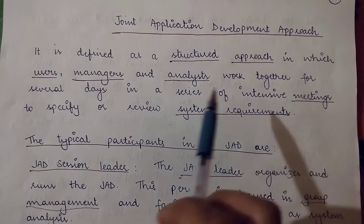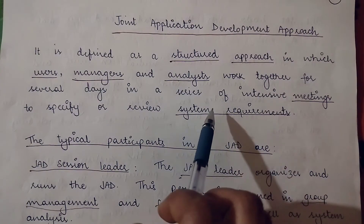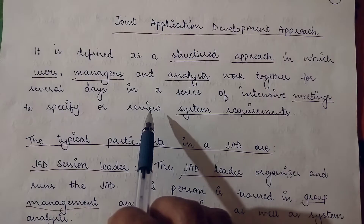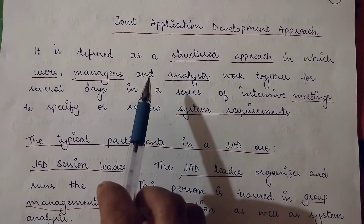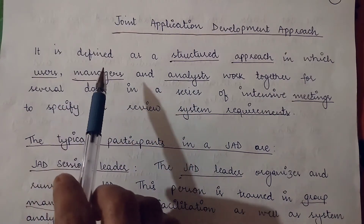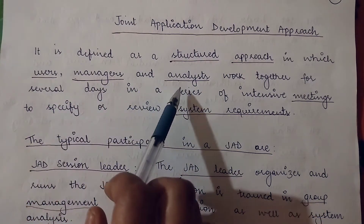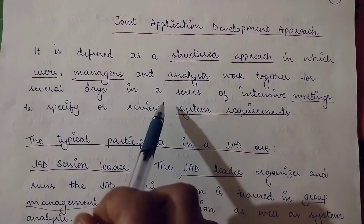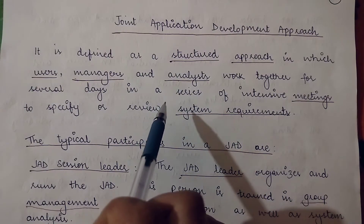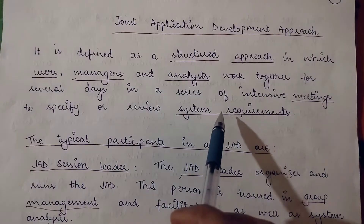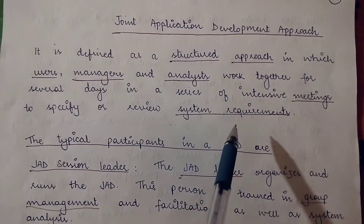Through these intensive meetings held over several days, the participants specify what the system requirements are, and then those system requirements are reviewed. All three vital players of a JAD session — users, managers, and analysts — work together by conducting a series of intensive meetings to identify and review system requirements.